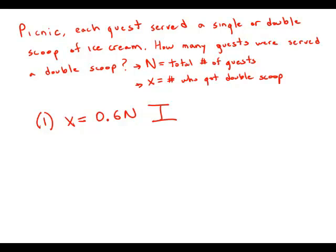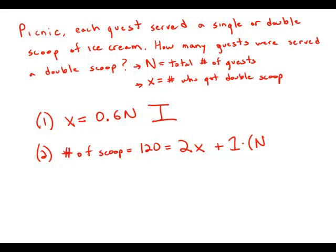Now we have to completely forget about statement number one and focus exclusively on statement number two. Statement number two tells us the total number of scoops is 120. The total number of scoops would be two scoops for everyone who got a double scoop — that's two x — plus one times everyone who got a single scoop, which would be n minus x. We have one equation but two variables, so this is insufficient to solve.